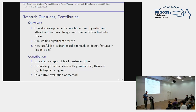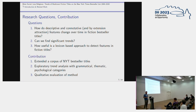Our research questions are: How do descriptive, connotative, and attraction features change over time in fiction bestseller titles? Can we find significant trends? And how useful is a lexicon-based approach to detect features in fiction titles? Our contributions: we extended the corpus of New York Times bestseller titles, performed an exploratory trend analysis with grammatical, thematic, and psychological categories, and conducted a qualitative evaluation of the method.